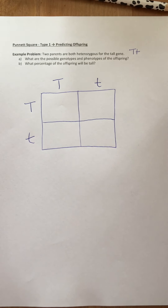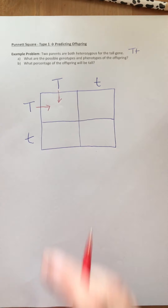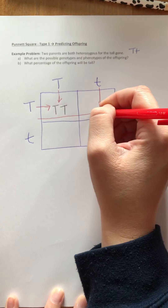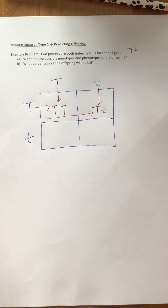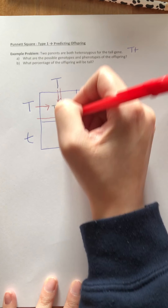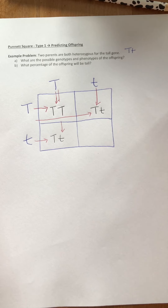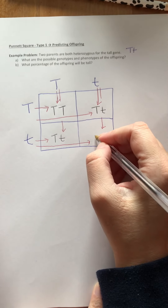Our next step is to fill in the square. You're going to take the letters above the square and to the side and drop them both into each box. For our first box, we drop down a capital T from the top and bring over a capital T from the side, giving us capital T, capital T. For the next box, drop down the lowercase t and bring over the capital T from the side — that gives us capital T, lowercase t. You always put the capital first regardless of whether it came from the top or the side. For the bottom row, bringing our capital T down and lowercase t from the side gives us capital T, lowercase t. And the last one, bringing our lowercase t down and lowercase t across gives us lowercase t, lowercase t.